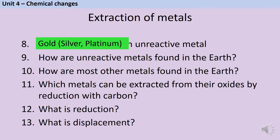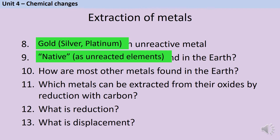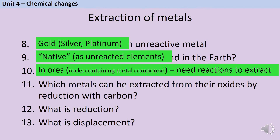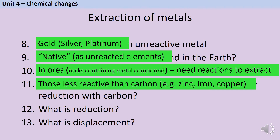Unreactive metals tend to be found native in the Earth's crust, which means they're found as unreactive elements, not part of compounds. Most metals are found in ores — rocks that contain enough of a metal compound to make it financially viable to extract it — and this requires chemical reactions such as reduction with carbon. The metals that can be extracted by reduction with carbon are those that are less reactive than carbon, so for instance zinc, iron, and copper. Reduction in this instance means the removal of oxygen. Displacement means a chemical reaction where a more reactive element takes the place of a less reactive element in a compound.